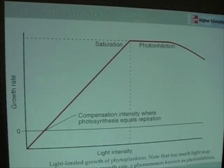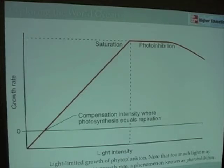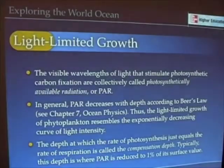This graph describes the relationship between growth and light intensity, and most importantly how light may be a limiting factor for the growth of phytoplankton, and how light can control the growth of phytoplankton in the world ocean.